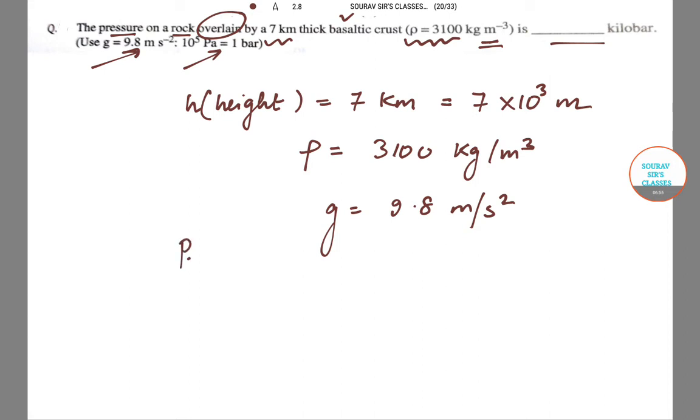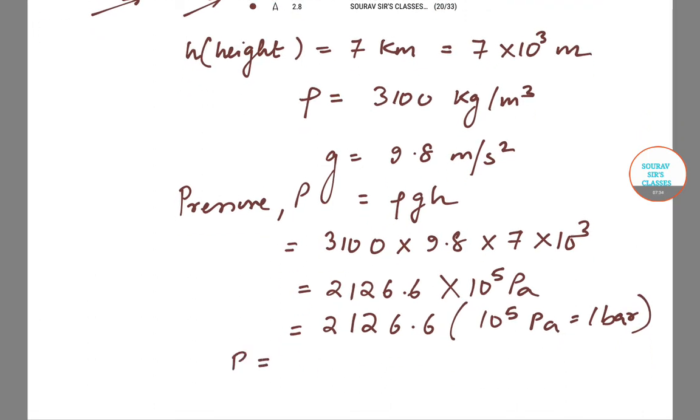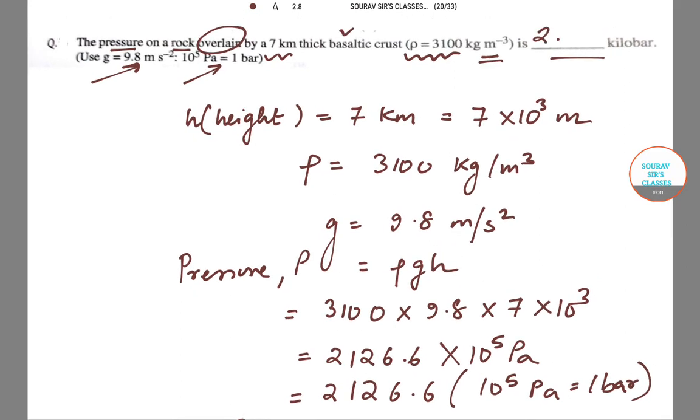And the pressure denoted by capital P is equal to rho into G into H. This is the formula. Let us substitute the values. So we have 3100 into 9.8 into 7 into 10 to the power 3. We will get this to be 2126.6 into 10 to the power 5. This equals 2126.6 bar because 10 to the power 5 equals 1 bar. So P is equal to 2.13 kilobar. The answer becomes 2.13.